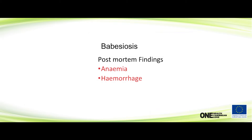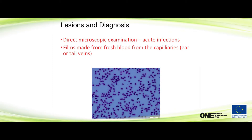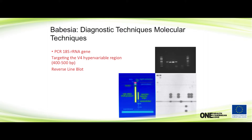Post-mortem findings include anemia and hemorrhage — you have these piriform bodies in the RBCs. Samples are taken from the ear or tail vein. Other methods include PCR and reverse line blotting, targeting different genes. One of the easiest genes to target is the 18S hypervariable region.